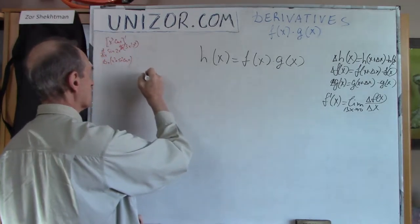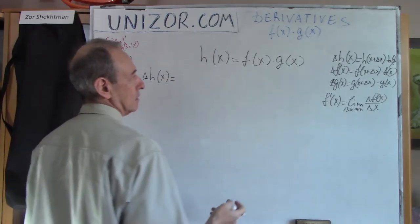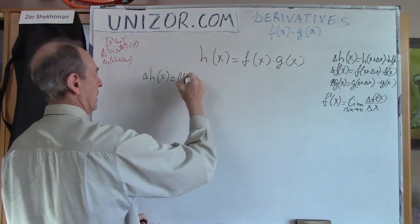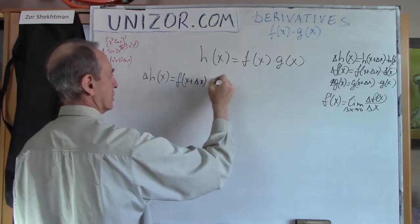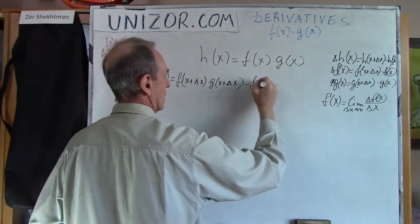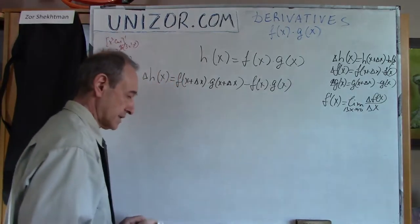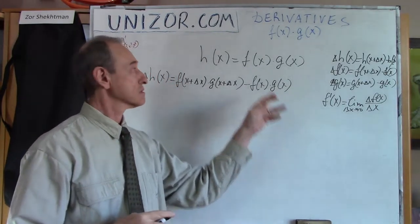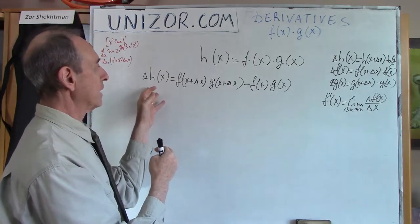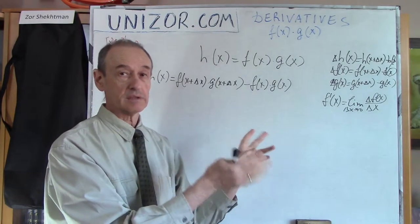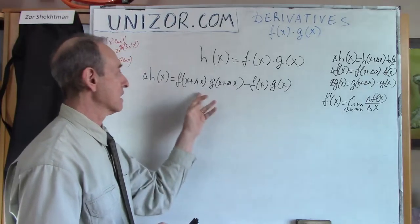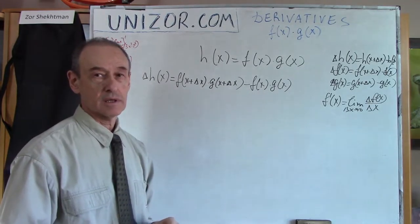So what is delta h(x)? It's h(x + Δx), which equals f(x + Δx) times g(x + Δx), minus h(x), which is f(x) times g(x). With a linear combination, I can regroup terms — but here I cannot, because this involves multiplication and subtraction.